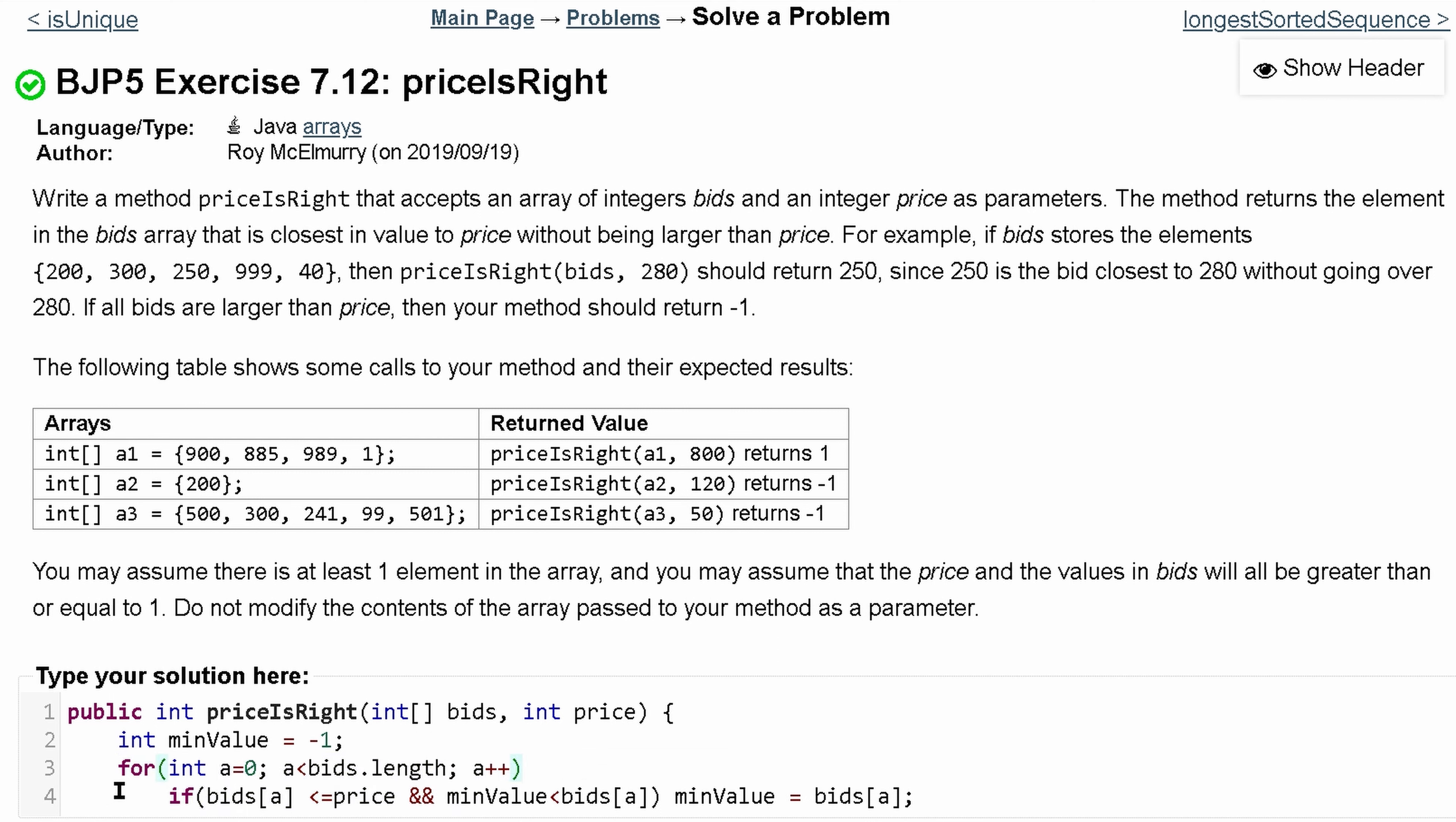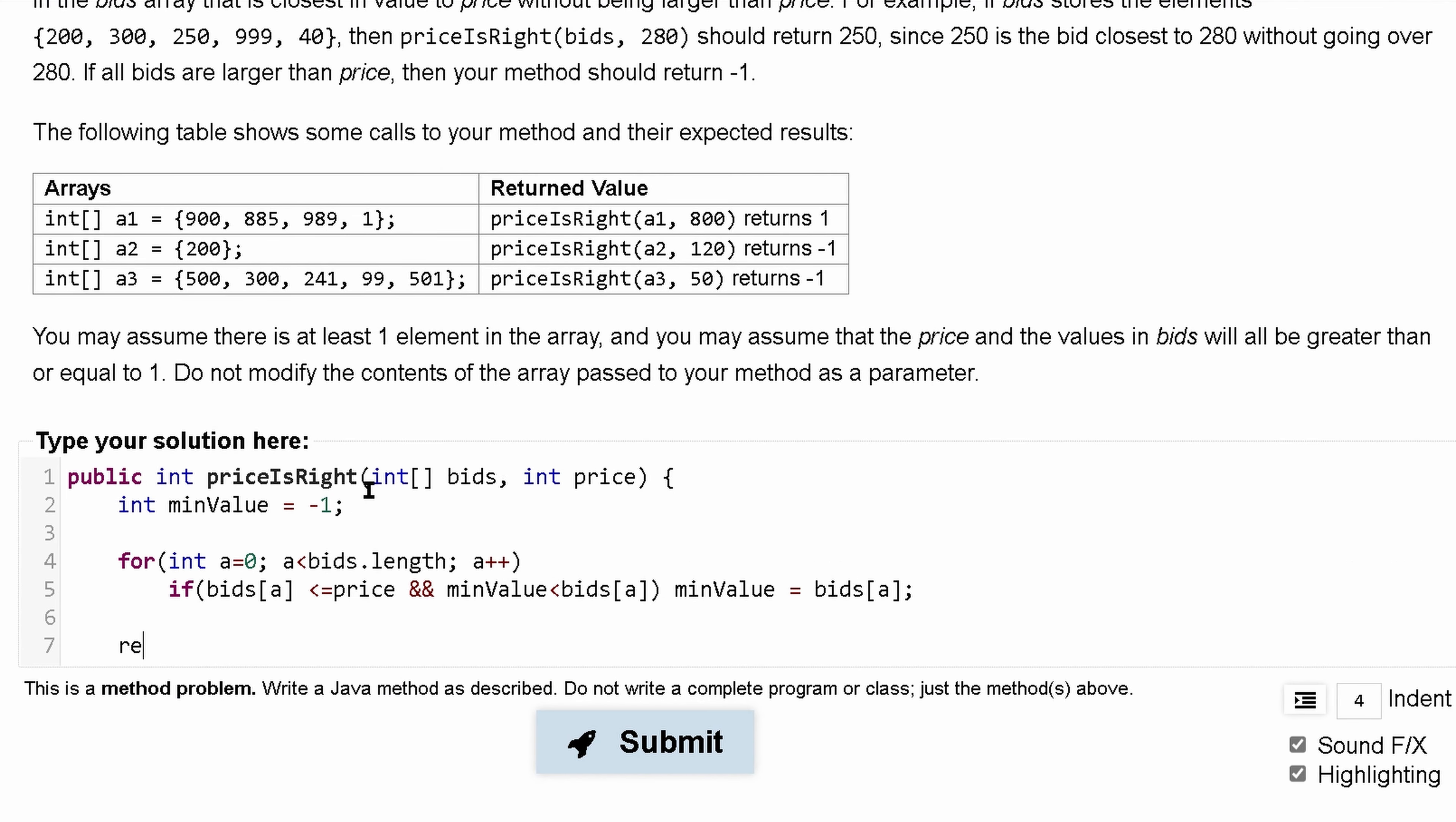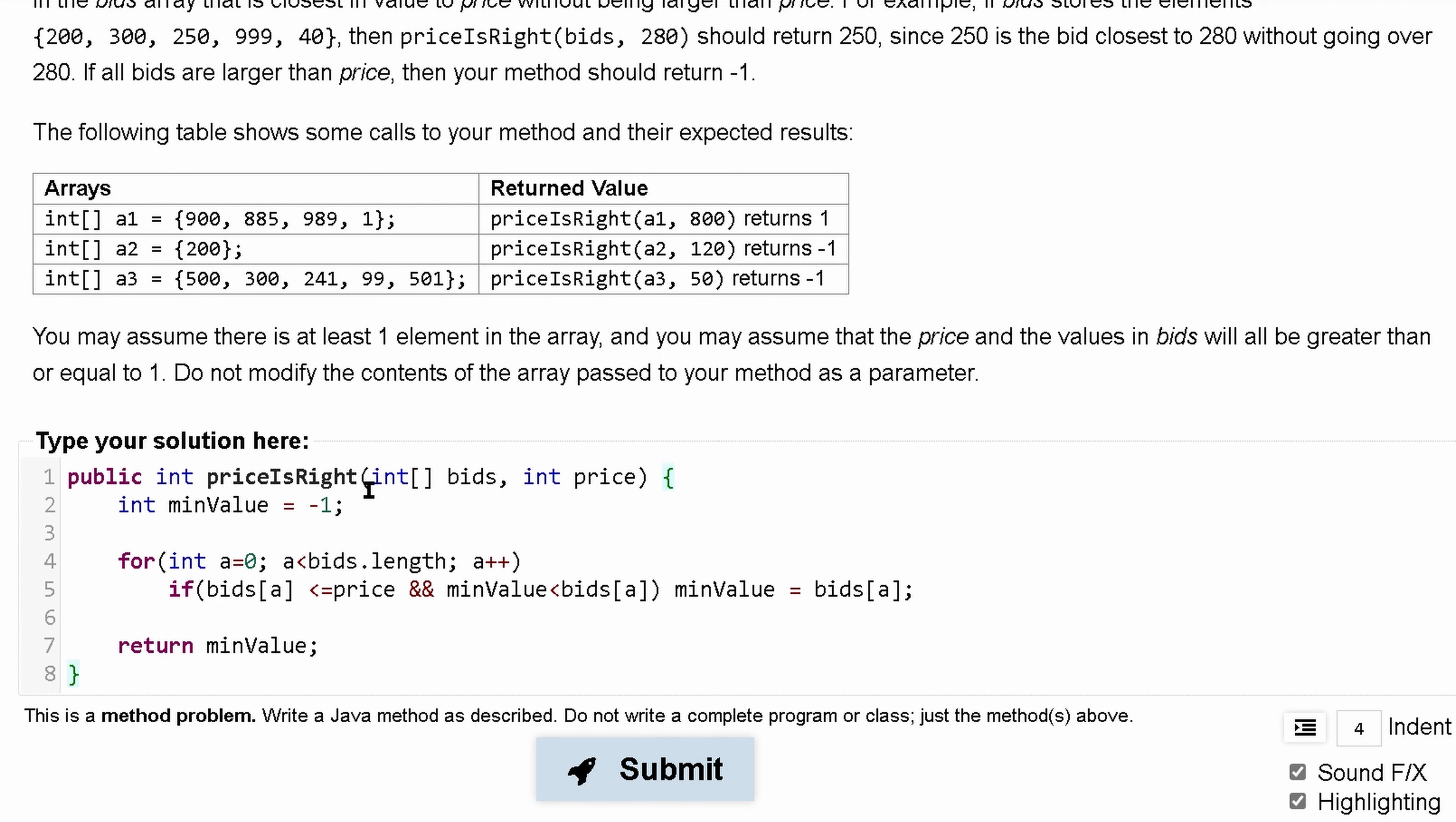So that's going to be inside of our for loop. You don't really need this bracket since we really only have one kind of thing inside of here. Once we're done though, you might want to include it for neatness, but once we're done, we're just going to return our minValue. We can close off our function and we can press submit, see what we get.